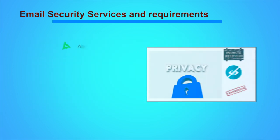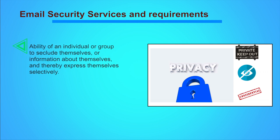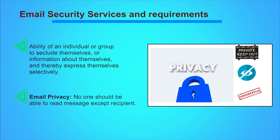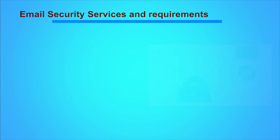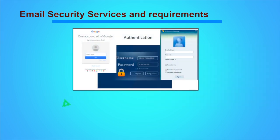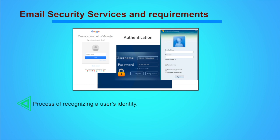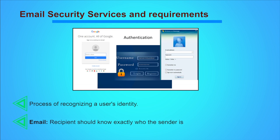Privacy is the ability of an individual or group to seclude themselves or information about themselves and thereby express themselves selectively. Email privacy means that no one should be able to read messages except the recipient. Authentication is the process or action of proving or showing something to be true, genuine or valid — it is the process of recognizing a user's identity. In email terms, recipients should know exactly who the sender is.